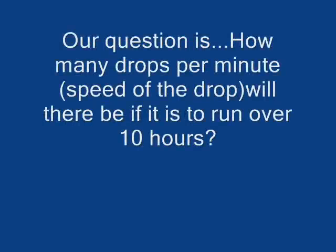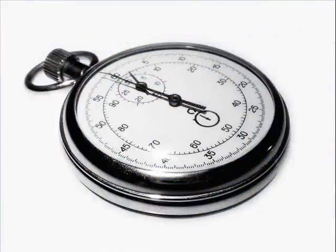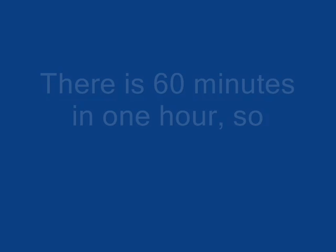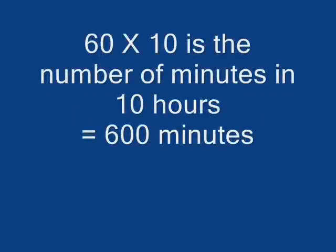Our question is: how many drops per minute will there be if it is to run over 10 hours? Let's look at the time first. There are 60 minutes in 1 hour. So, how many minutes are there in 10 hours? We multiply 60 by 10 to get 600 minutes.